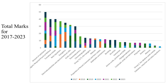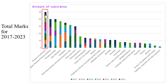You can see from this graph that whilst you could be assessed on any topic at all, there are some topics they prefer to ask about more than others. In first position across all seven papers is the amount of substance topic. The papers run from 2017 at the bottom in medium blue through 2018, 19, 20, 21, 22, and 2023 in dark blue at the top. Amount of substance comes up on every single paper and is worth the most marks overall across those seven papers.